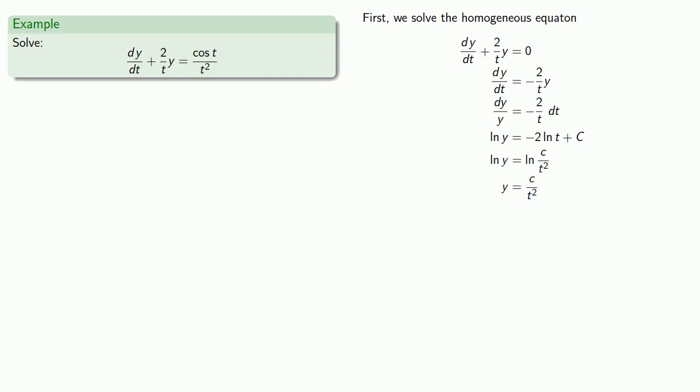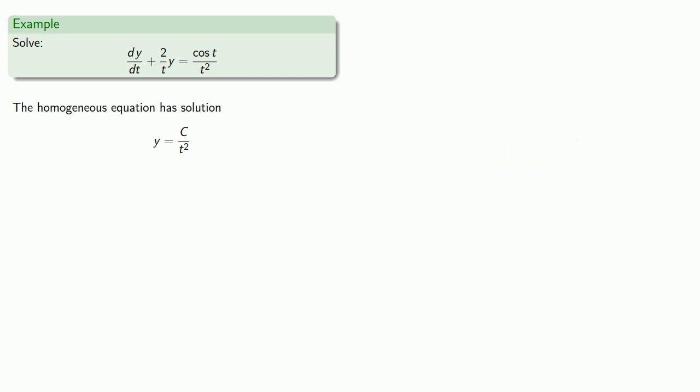And so our homogeneous equation has solution c/t². So in the homogeneous equation, c is a constant. So now we'll assume that c is some function of t. So now we assume y = c(t)/t² and substitute.